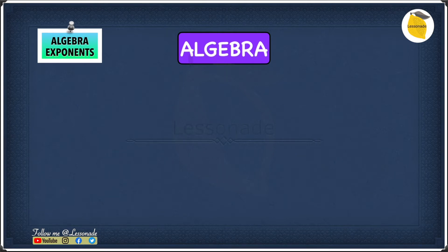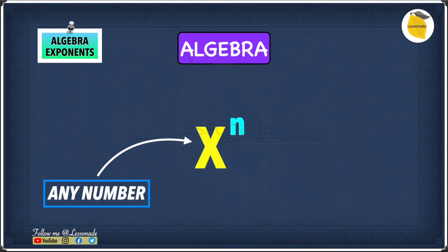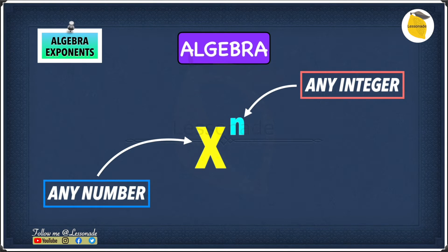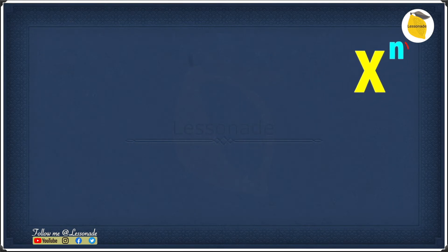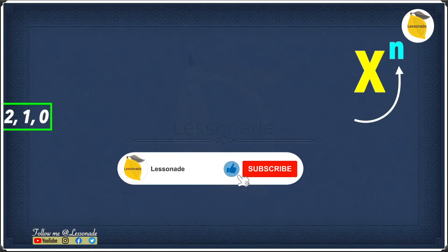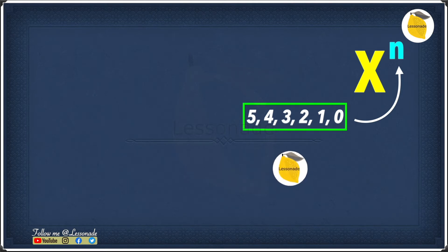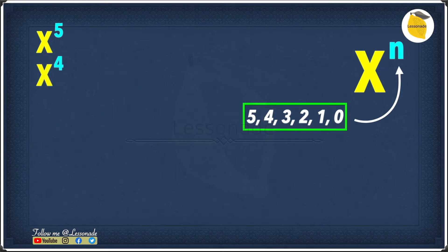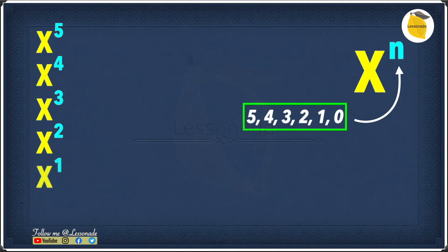Before we look at the questions, we need to look at x to the power of n. Here, x stands for any number, but n can only be an integer. We can substitute values for n such as 5, 4, 3, 2, 1, and 0. So x to the power of 5, 4, 3, 2, 1, and 0 are all possible expressions.